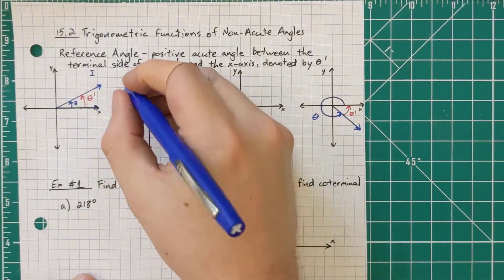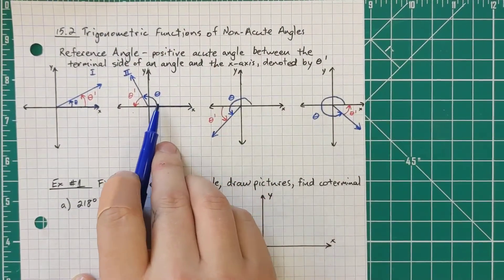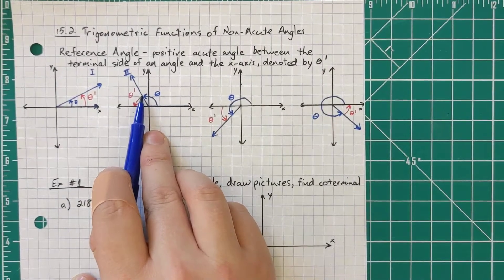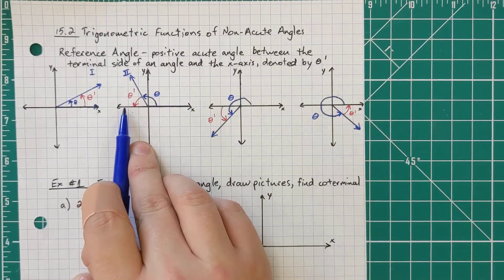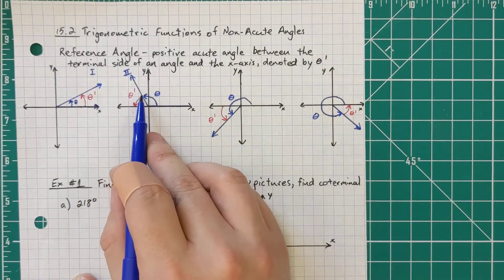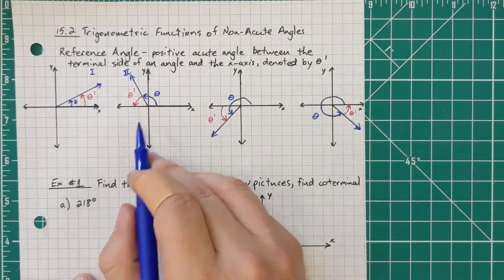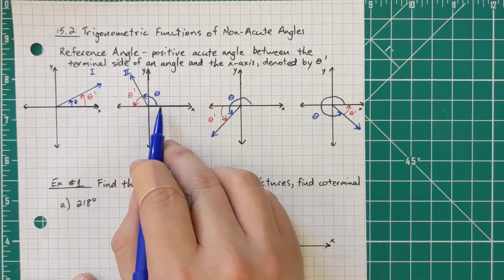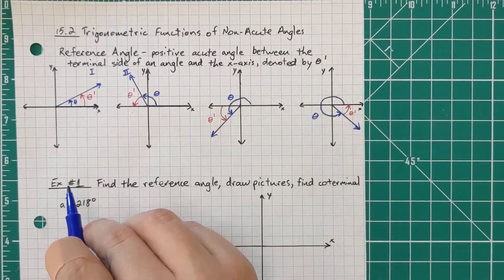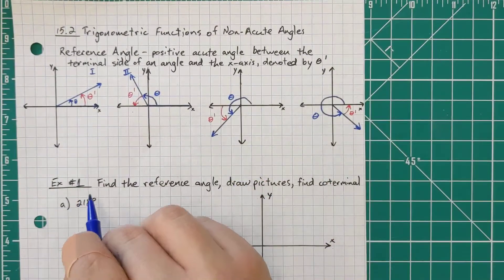Right here, notice it is in the second quadrant. So theta goes past the y-axis, so it's going to be more than 90 degrees but less than 180 degrees. And so theta prime will be between that terminal side and the x-axis. Notice that these two angles together are supplementary, meaning they add up to 180 degrees. So if it's in the second quadrant, those two angles are supplementary.